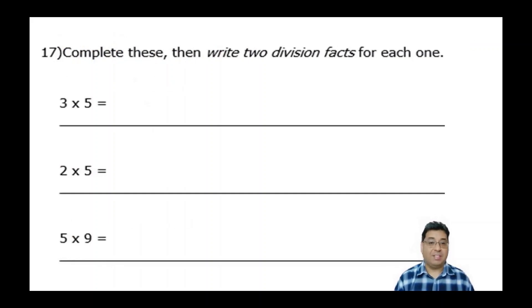Number 17 says just to complete these, then write two division facts for each one. Like I said, reading and comprehension, make sure you're reading it and make sure you're following the directions.